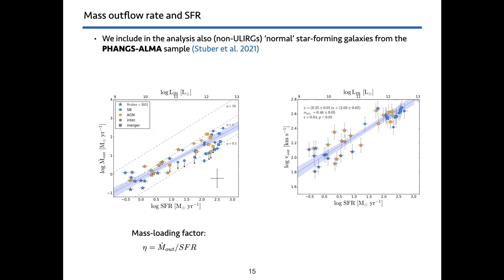The final question asks: do you have a clear signature of the outflow in the second order moment maps or dispersion maps? In all cases we see that the moment-two map is enhanced in the center where the outflow is located. But in most cases, with the resolution we have, we cannot see if the moment is more elongated in one direction or the other. Thank you again Isabella for your nice talk — remaining questions will be taken to the Slack channel.